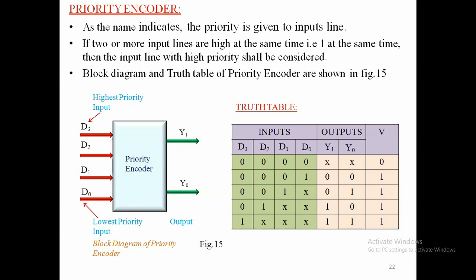Next is the priority encoder. The name itself says it depends on priorities. The output code is invalid when two or more inputs are applied at the same time, so we have to modify this circuit. In the modification, we define the priority of the given inputs. Whenever two or more inputs are applied at a time, the internal hardware checks this condition — if the priority is set, the higher-numbered input is considered.